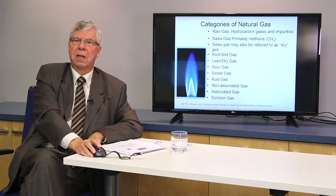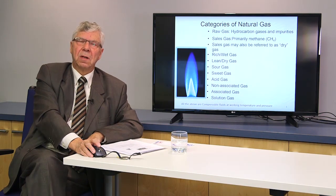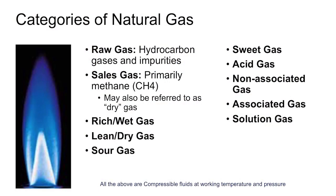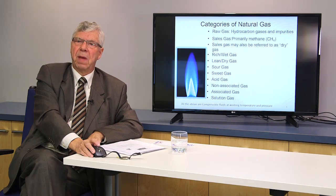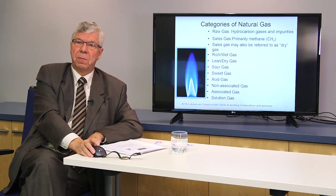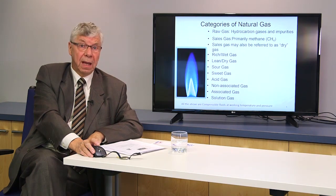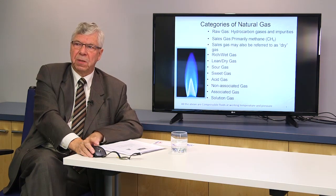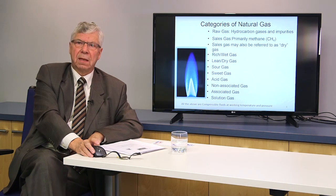Categorizing natural gas, what comes from the wellhead is generally termed raw gas because it contains impurities. We treat that and convert it to almost pure methane in sales gas, which has about 98% methane content. It's also referred to as dry gas because the liquids have been removed. You've also got categories known as rich or wet gas — rich because the calorific value is higher due to energy-containing components like butane and propane. When those liquids are removed, we're left with lean dry gas.